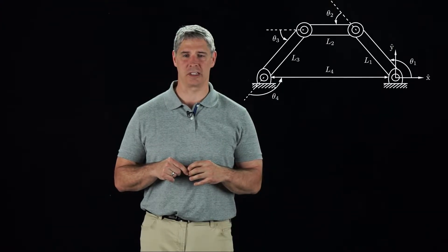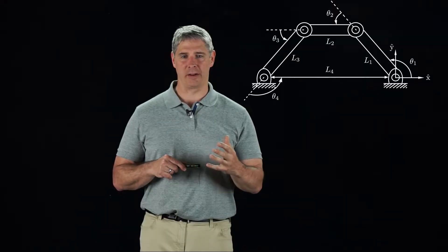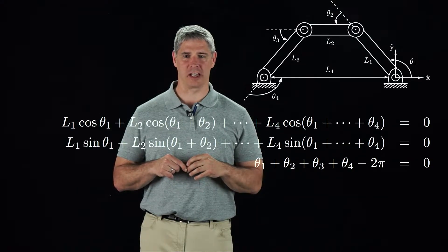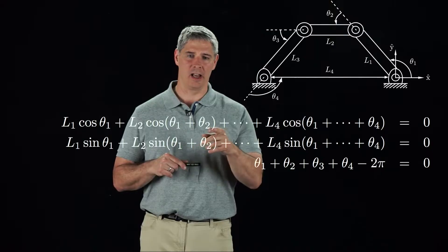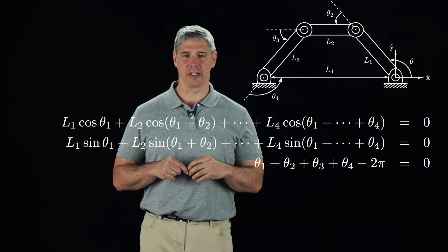Instead we could view the C space as a one-dimensional space embedded in the four-dimensional space of joint angles, defined by the three loop-closure equations that say the final position and orientation after going around the loop must be equal to the initial position and orientation.